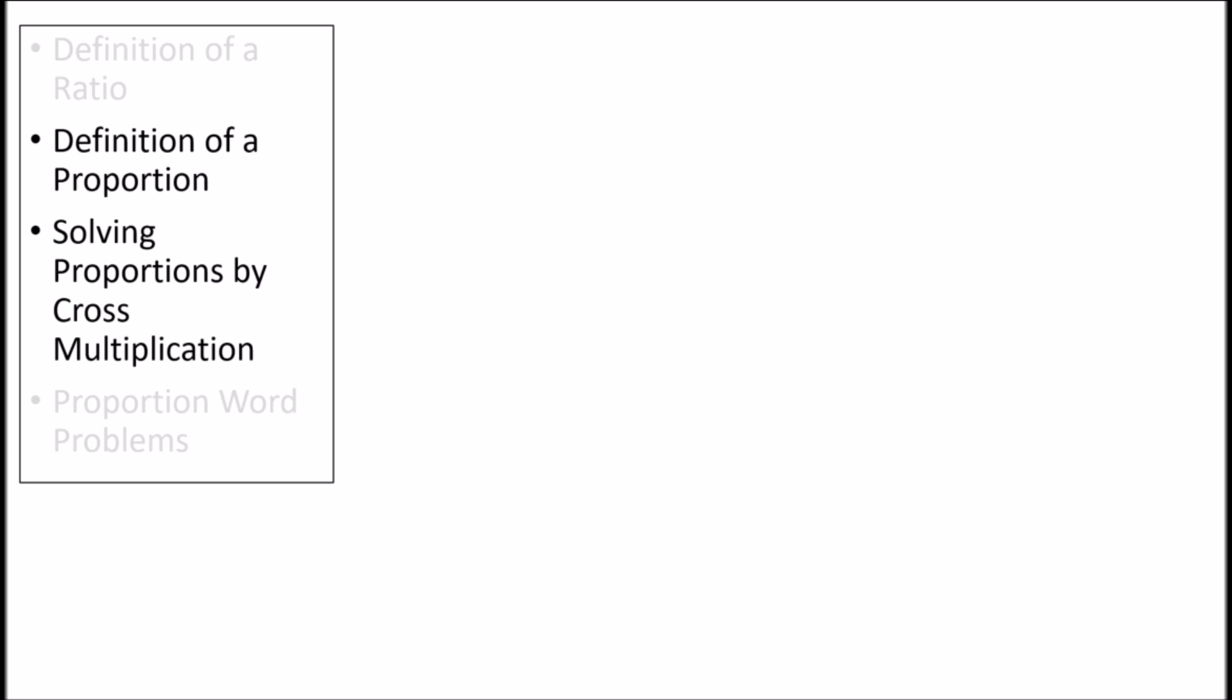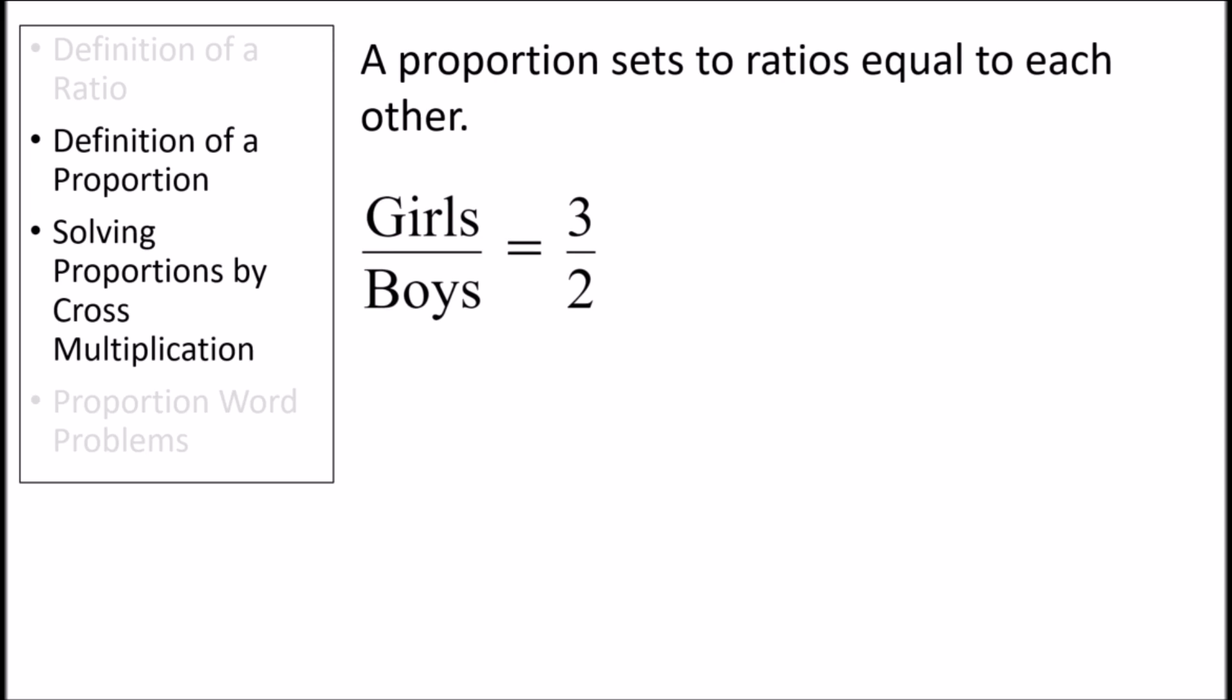Now let's define a proportion. A proportion is an equation that has two ratios equal to each other. For example, let's say that in a certain classroom, the ratio of girls to boys is 3 to 2. Here we have a proportion because we have set the ratio of girls to boys equal to 3 to 2. Let's also say that we know this classroom has 14 boys in it. We can now solve this equation to determine the number of girls in the classroom. A common way to do this is through cross multiplication.